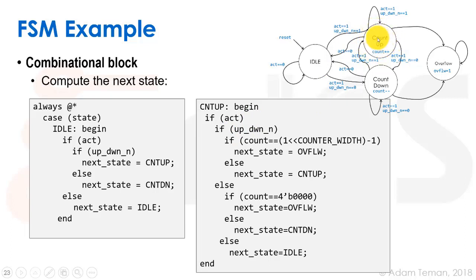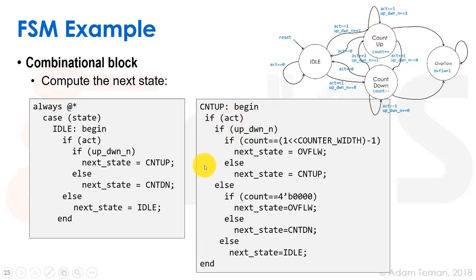For count_up it's more complex. We have: an arrow to idle when act goes to zero; staying in count_up when act is one and up_down is one; going to countdown when act is one but up_down goes low; and going to overflow when the overflow condition is met. So first, if not act, next_state goes to idle. If act is high, we enter our code block and check up_down. When up_down is one we're counting up, so we look at the overflow condition.